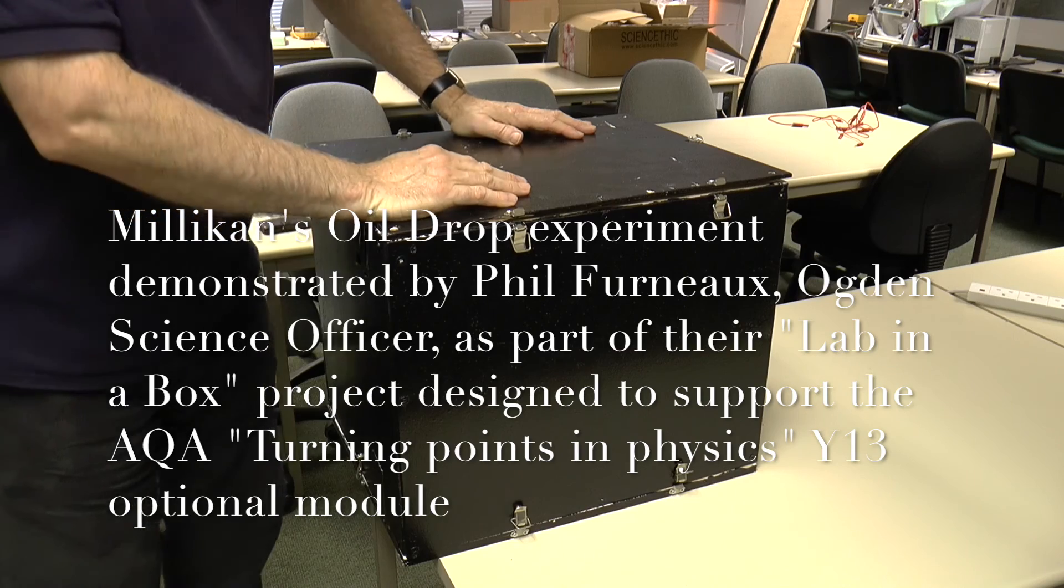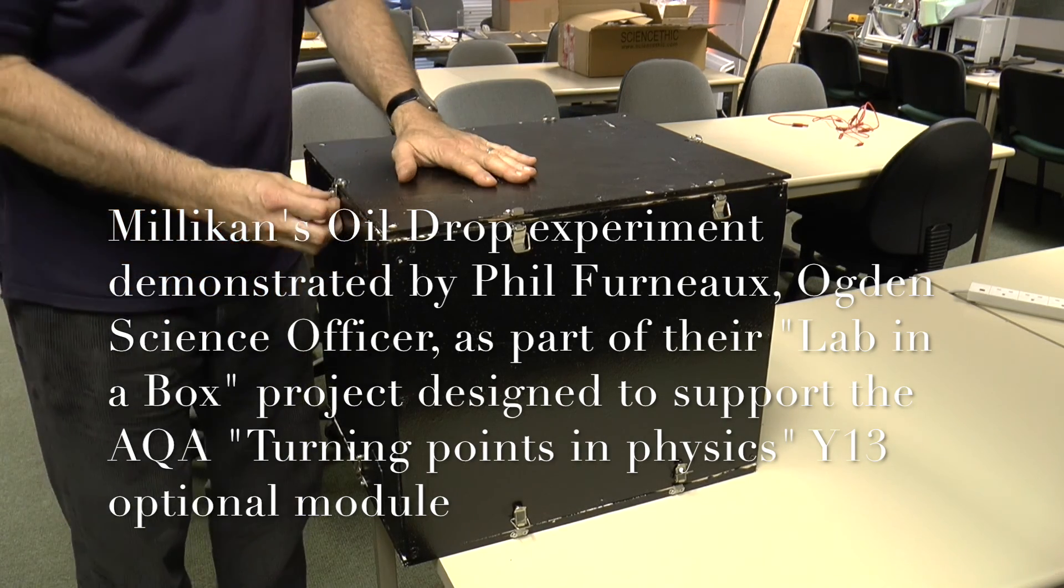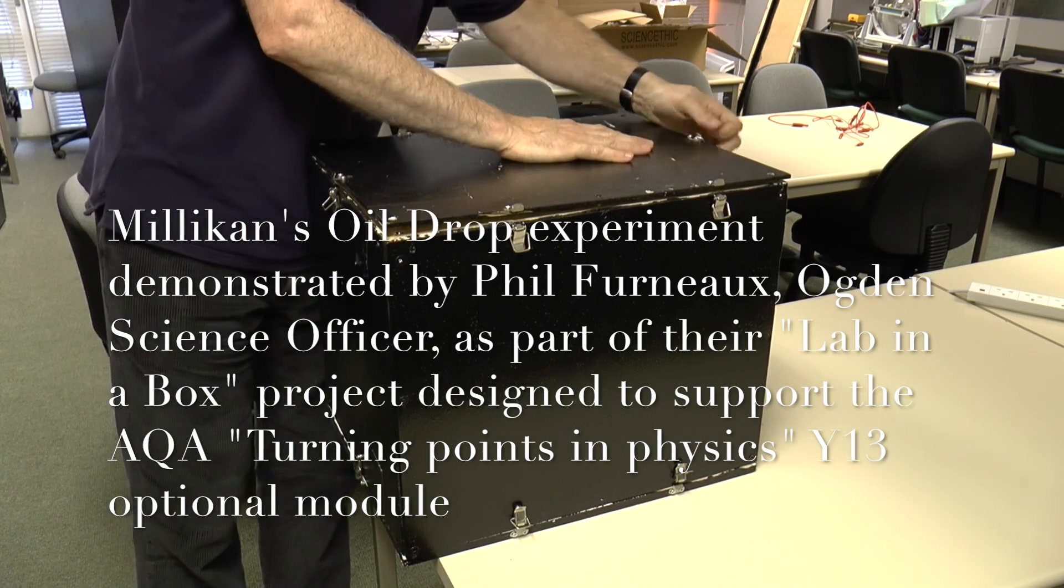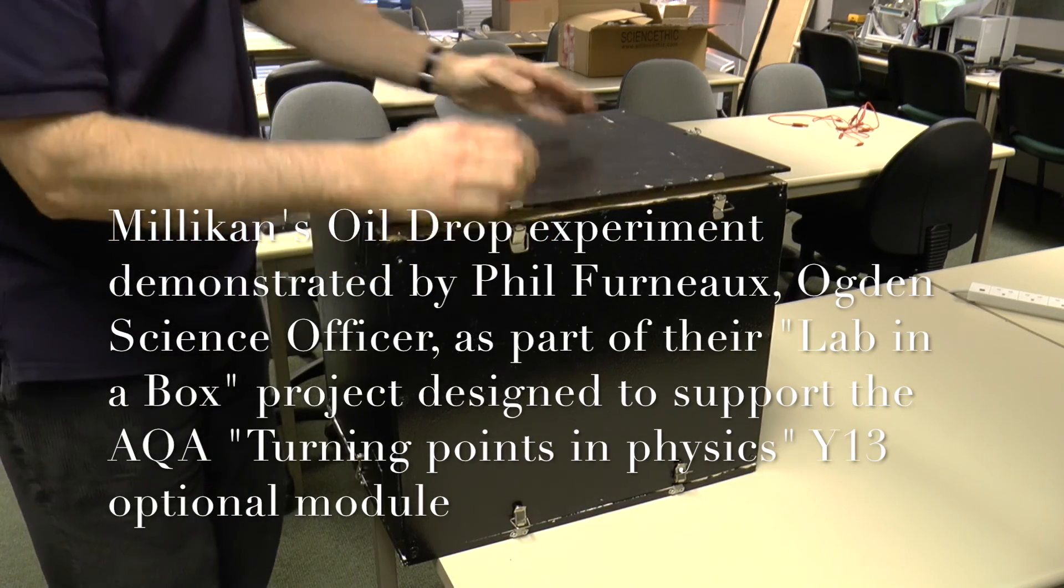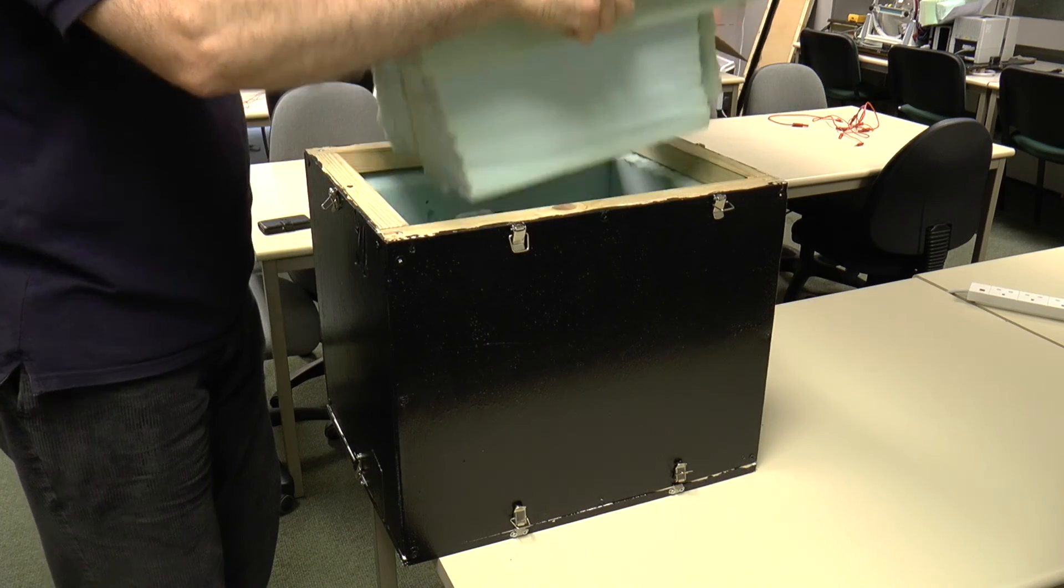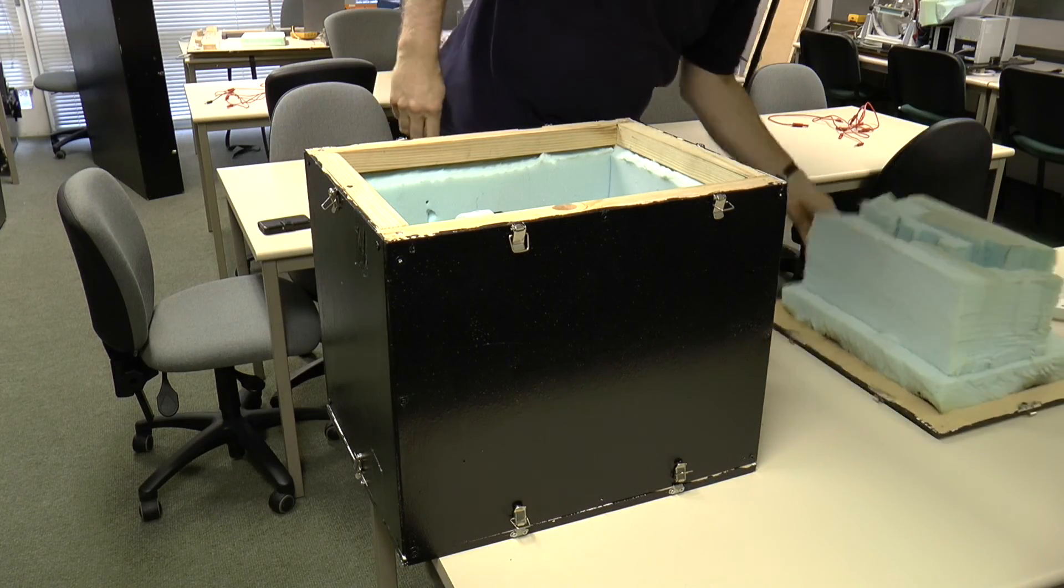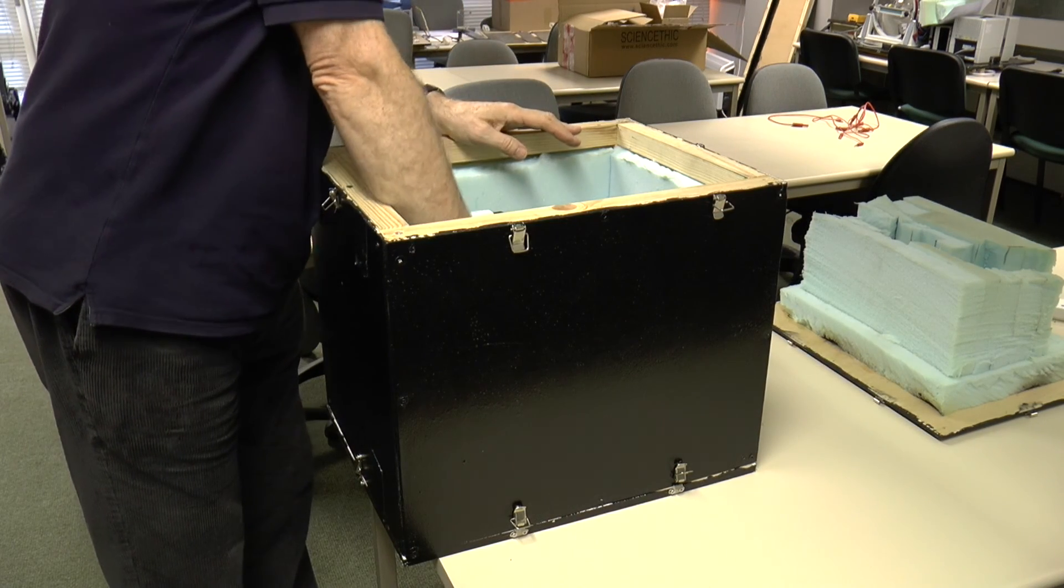When you get the box for the Millikan's experiment, then you take the top off, this lid off first. You carefully pull the lid off and then you take out the contents.